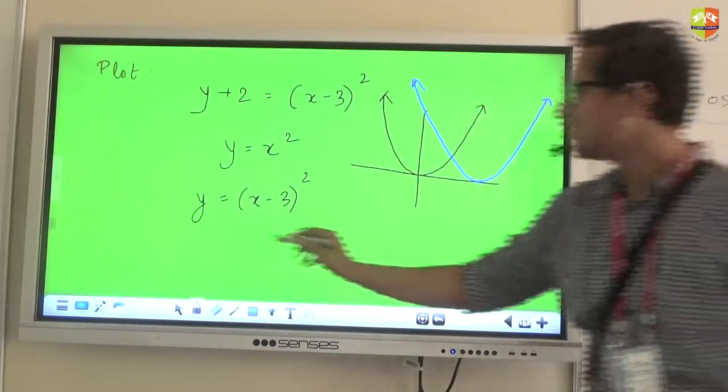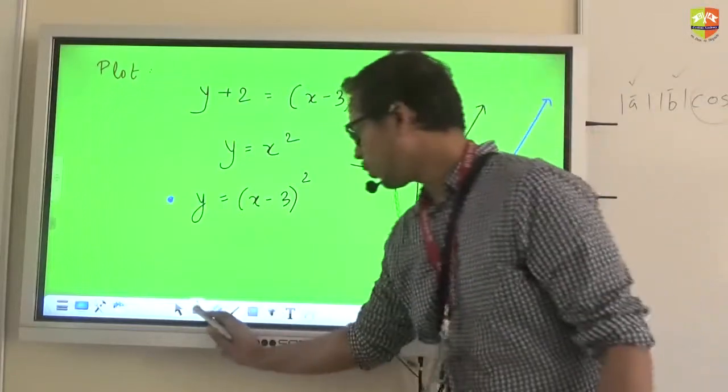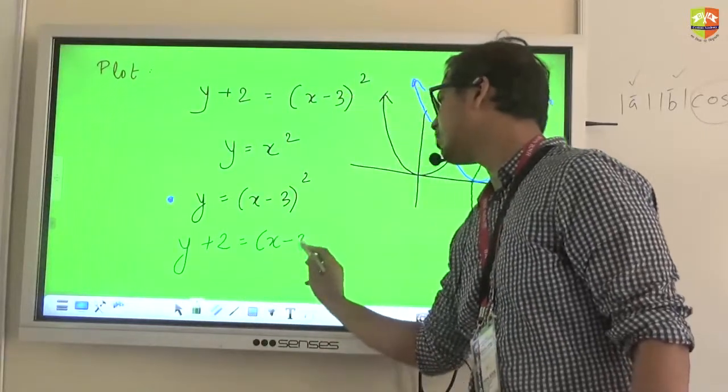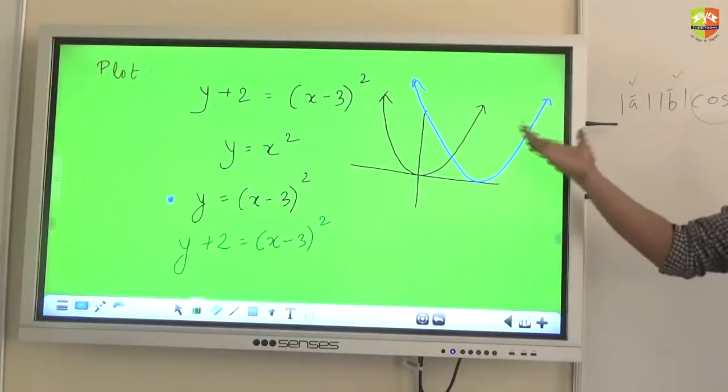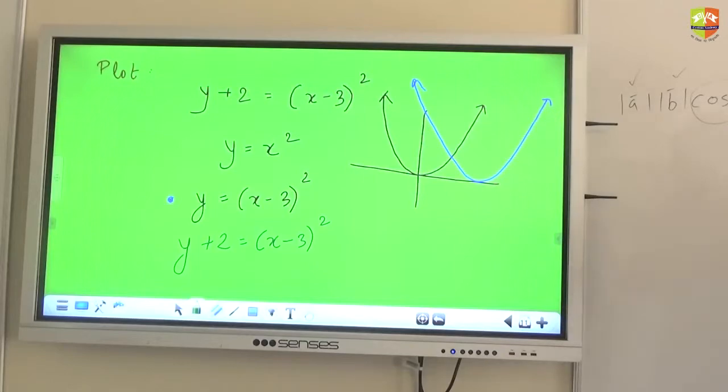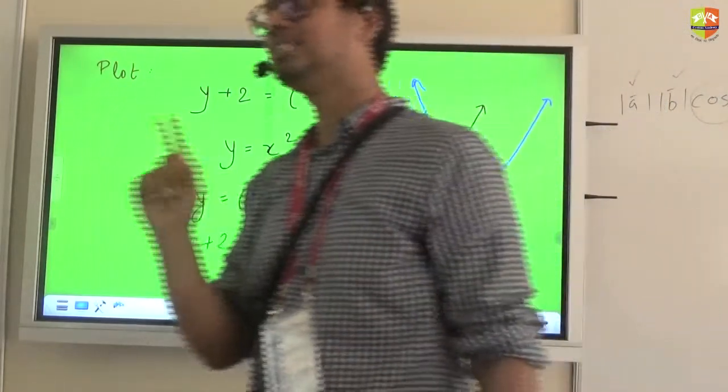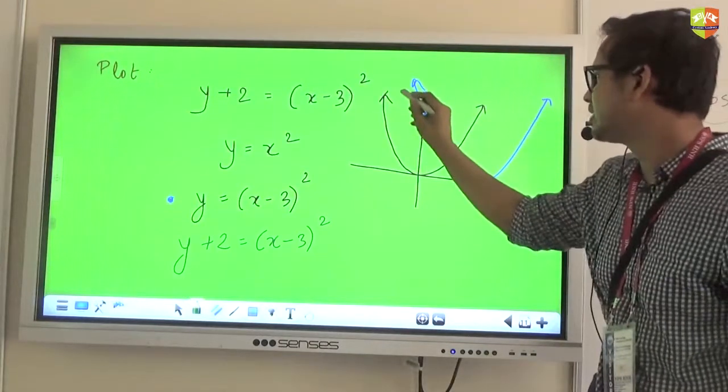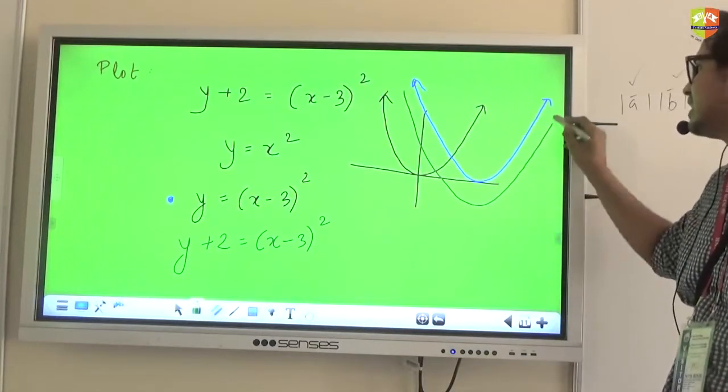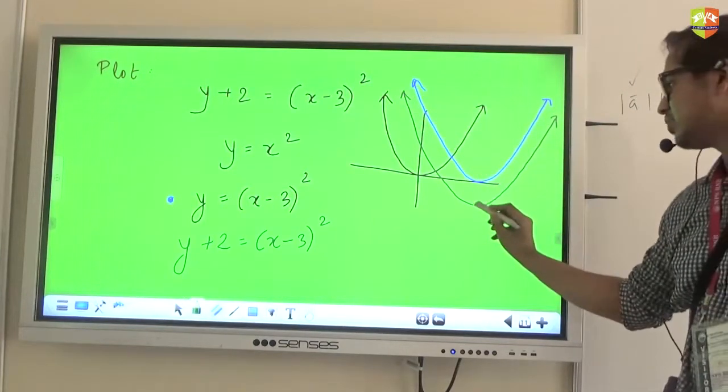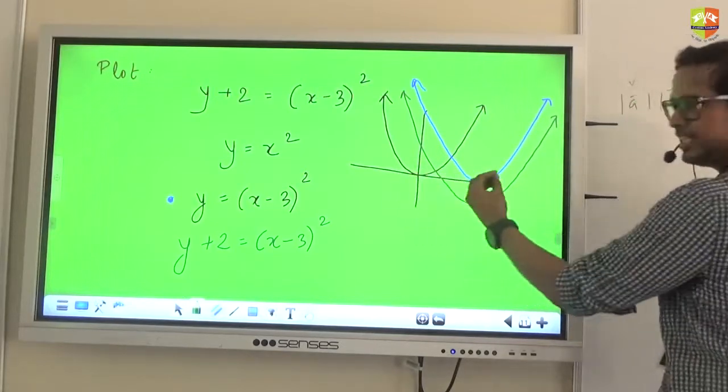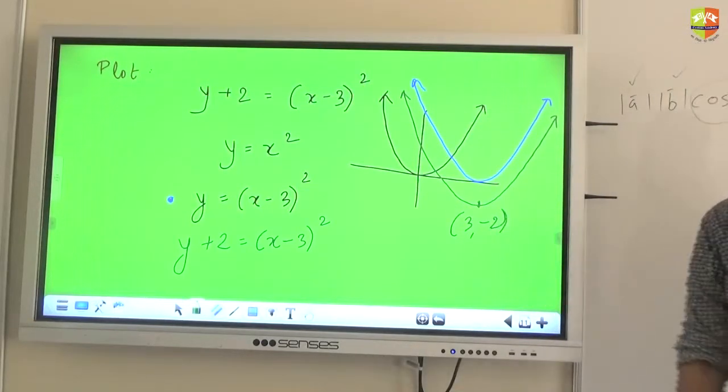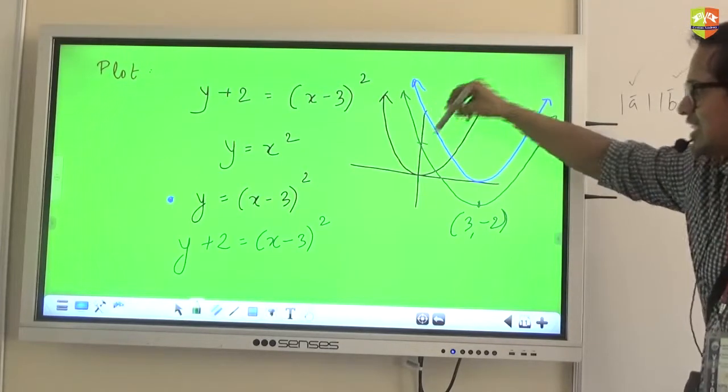This is the graph of this one. Now if I change it to y plus 2, that means I am replacing my y with y plus 2. What will happen to this graph, down by 2 or up by 2? Down by 2. See, the rule: when you change y with y plus h, h being a positive quantity, graph will bring h units down. So the same vertex point will now come 2 units down. This green one is your final graph. Now this vertex position will be what? From (0,0) you took it to (3,0), from (3,0) you are bringing 2 down, so what will this position be? (3,-2).